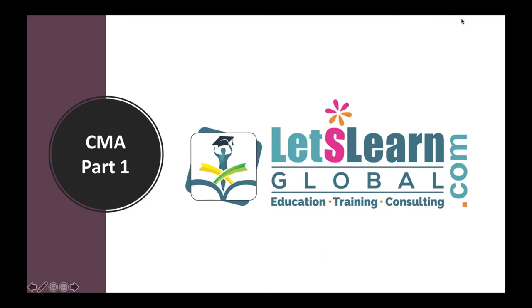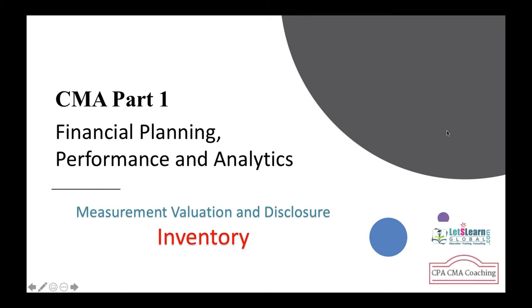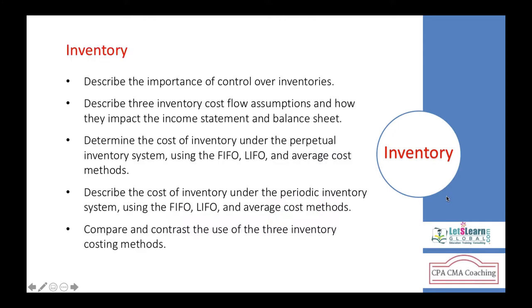Welcome to the session on CMA Part One: Financial Planning, Performance and Analytics. We'll discuss inventory — measurement, valuation, and disclosure of short-term items. Topics include how we record inventory in financial statements, the flow methods used in business, how inventory errors reflect in financial statements, inventory cost flow methods like FIFO, LIFO, average cost, perpetual inventory system, and periodic inventory system.